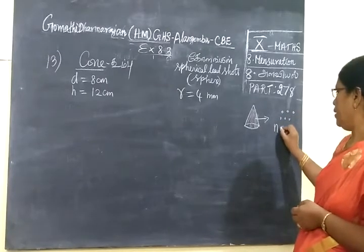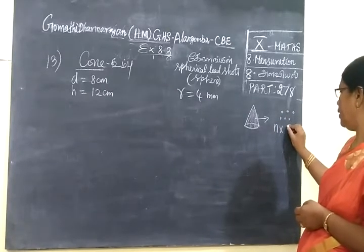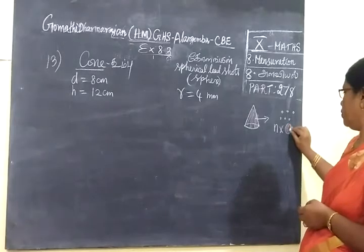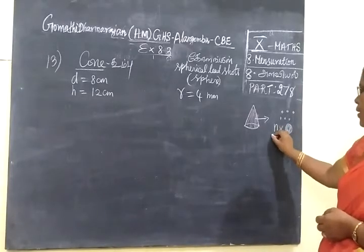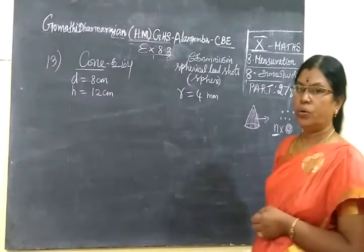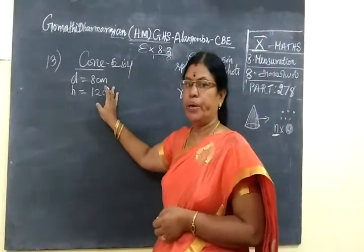So we are making N number of lead shots. From the N number of lead shots, one cone is made.